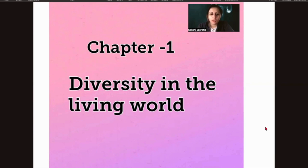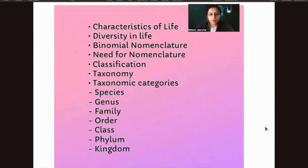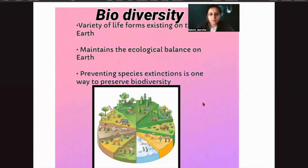Now we are going to start with Diversity in the Living World. What does the word diversity mean? Diversity in the living world means we are not categorizing just plants or microorganisms or animals — we are talking about all of them. In this chapter, we will talk about the characteristics of life, diversity, nomenclature, the need of nomenclature, and various classification levels.